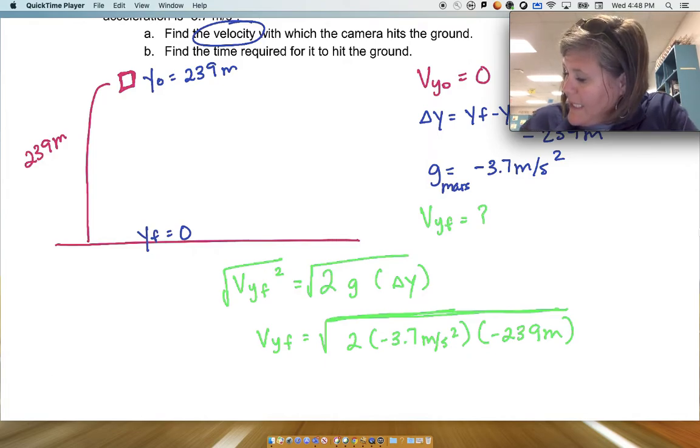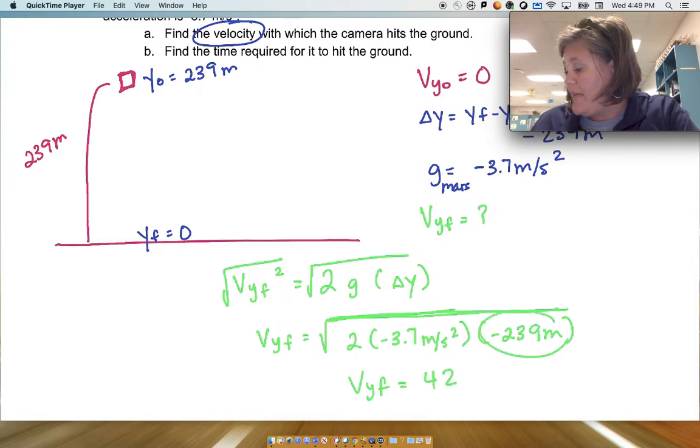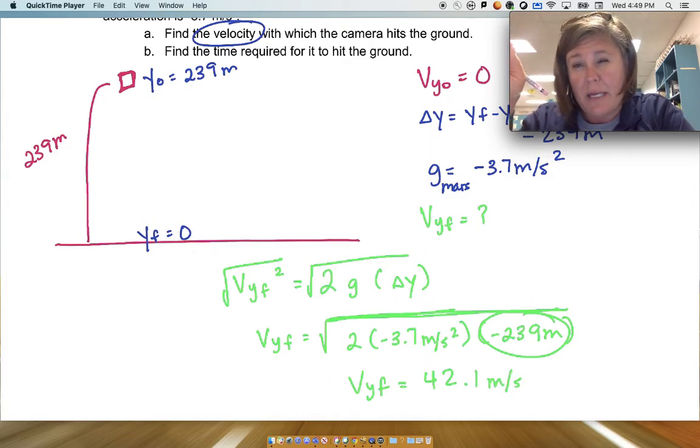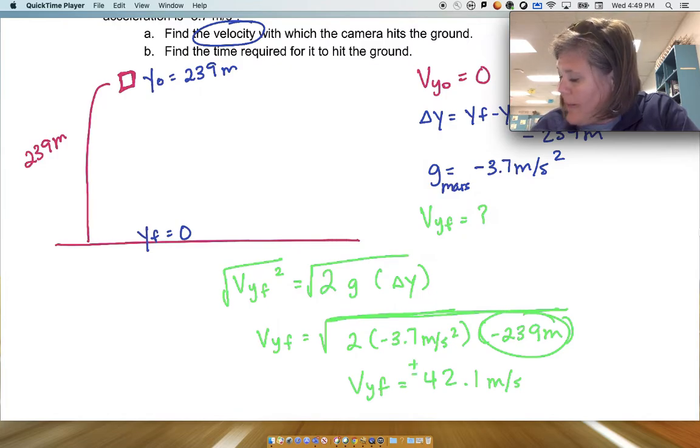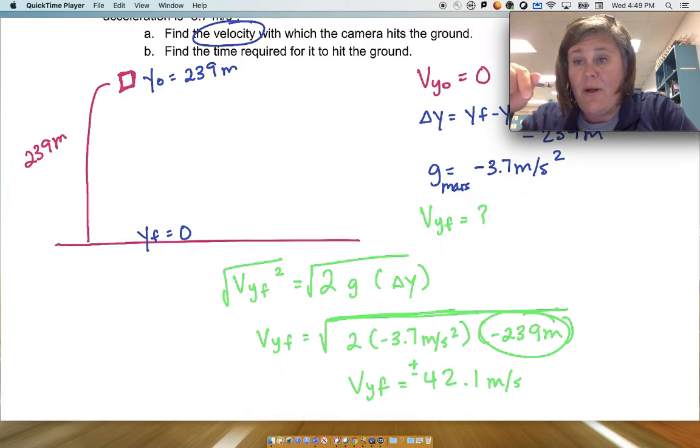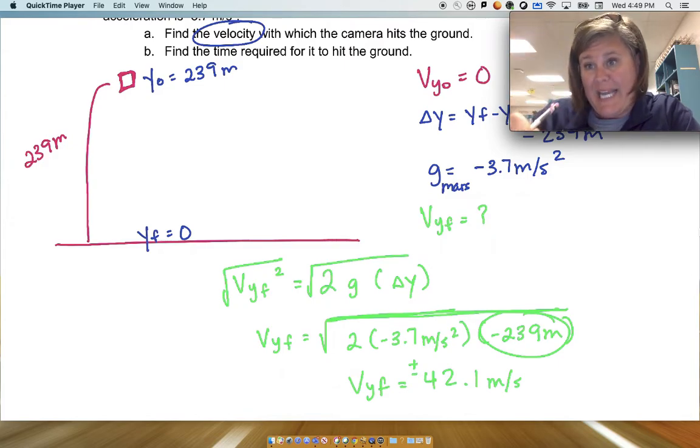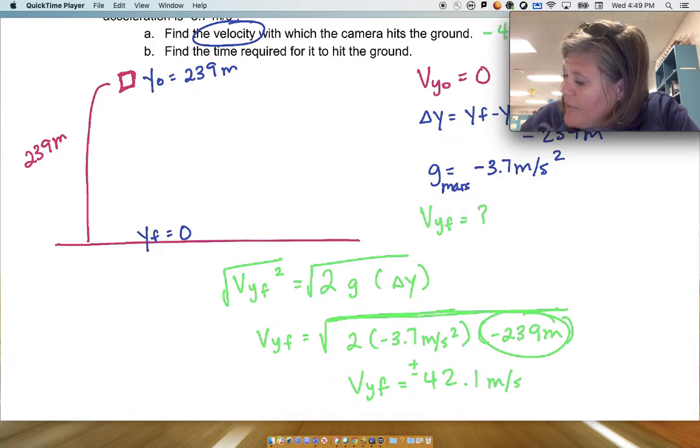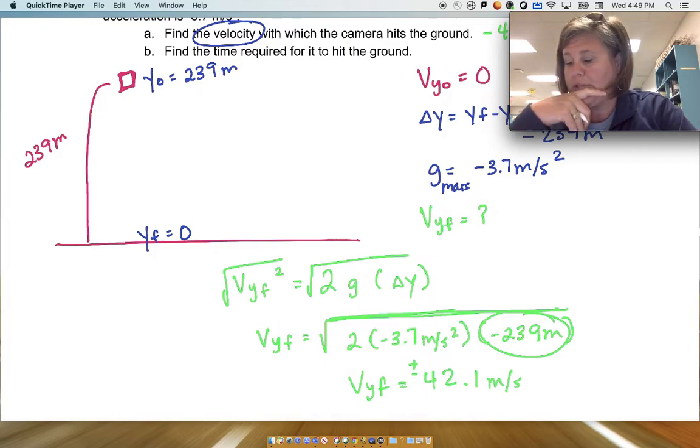And I'm getting here 42, let's go three sig figs here, 42.1 meters per second. But do you know how when you take the square root of something, it's plus or minus? Well, we know that this velocity is going to be negative because the object is falling down, and we have denoted that down is negative.